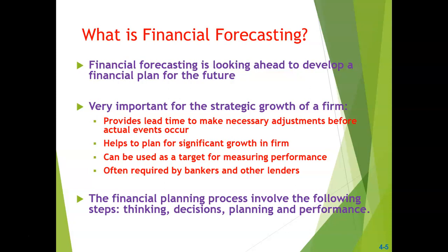The financial planning process involves the following steps. First, thinking — consider a company's current business as well as challenges and opportunities. Then decision — what direction is the company going, what resource commitments is the company willing to make? Then planning — development of financial plans and budgets. And finally performance monitoring — evaluating and taking corrective action where necessary.